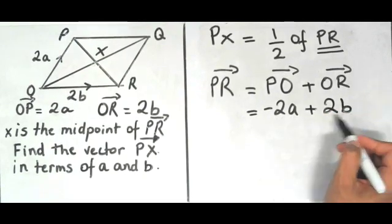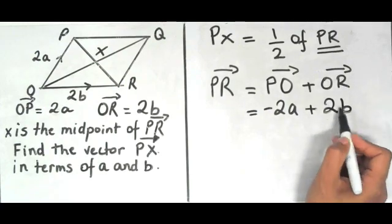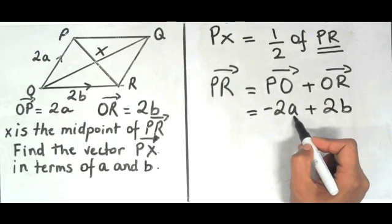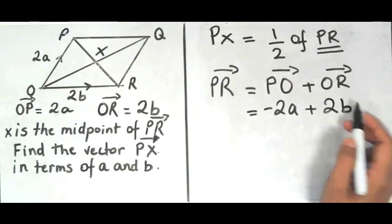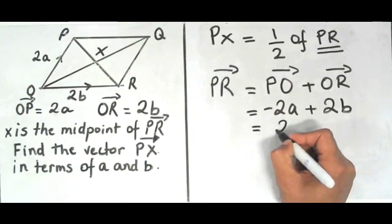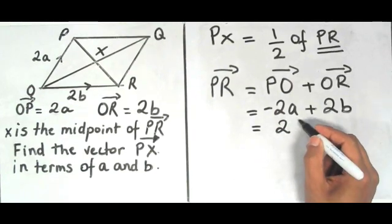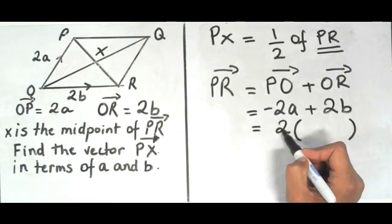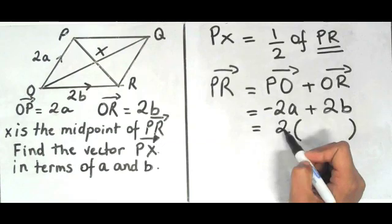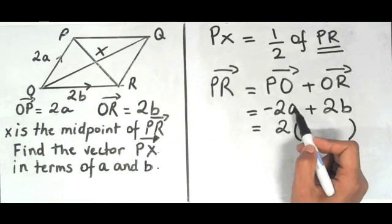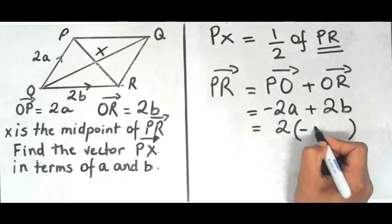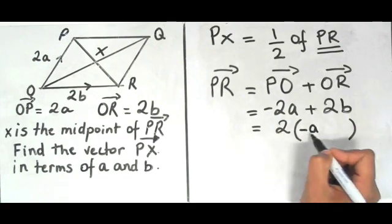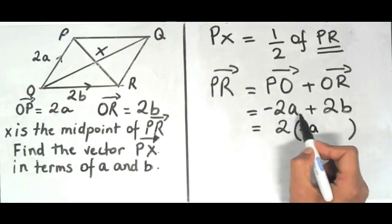As you can see here on this expression I have a common factor of 2. I've got a 2 present here in front of the a and a 2 present in front of the b. So I can just factorize this. You don't necessarily have to factorize but I'm just doing that as an extra step. So I'm going to take the factor of 2 out and then I'm going to ask myself what can I multiply the 2 by to make it minus 2a again. So I'm obviously going to multiply this by minus a because 2 times minus a gives me the minus 2a back.